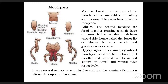Labium bears tactile sensillae (responsible for sense of touch) and gustatory sensillae (responsible for sense of taste). Hypopharynx is a small cylindrical mouthpart sandwiched between the first maxillae, covered by labrum and labium on dorsal and ventral sides respectively. It bears sensory sensillae on its free end and the opening of the salivary duct at its base. Hypopharynx acts like a tongue in the middle of all mouthparts.